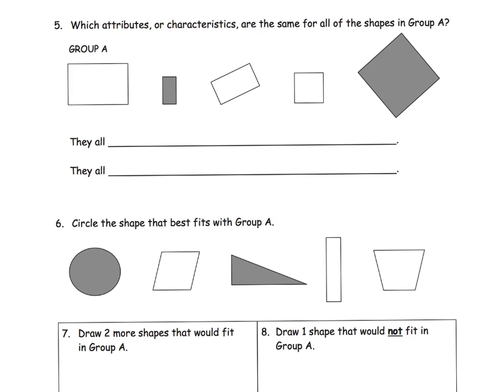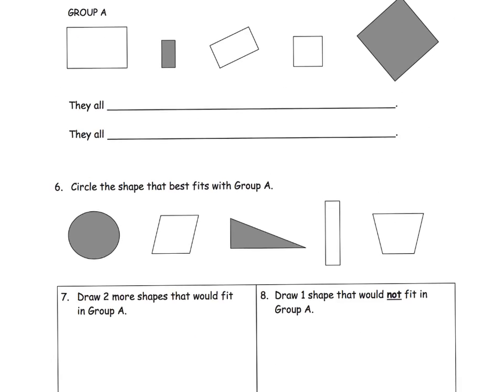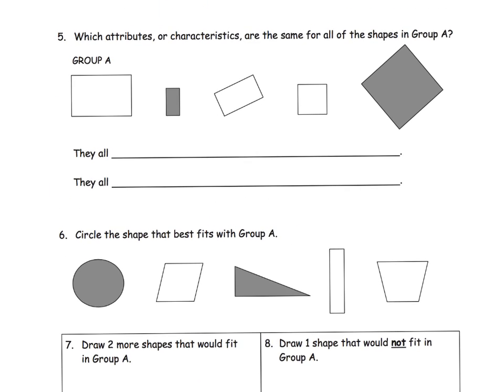Again, we're going to just kind of do a little unique thing and just scroll down on this page. So, starting with five, which attributes or characteristics are the same for all of the shapes in group A? So, we're going to look at group A. And what do we notice? And parents and teachers, let your students call out everything that they notice.